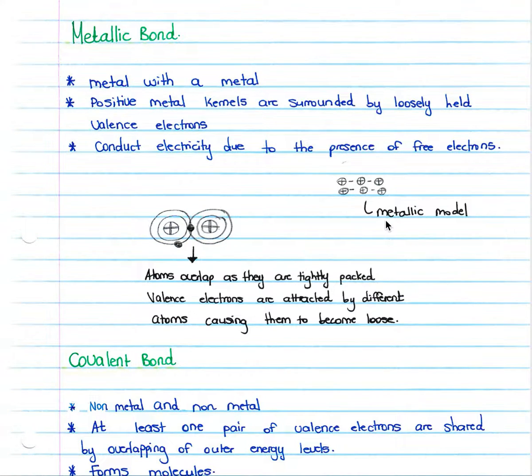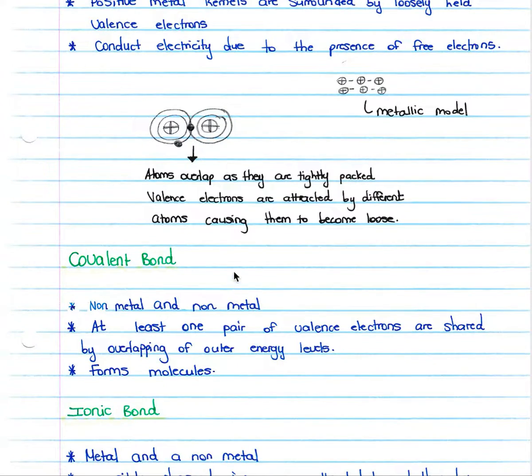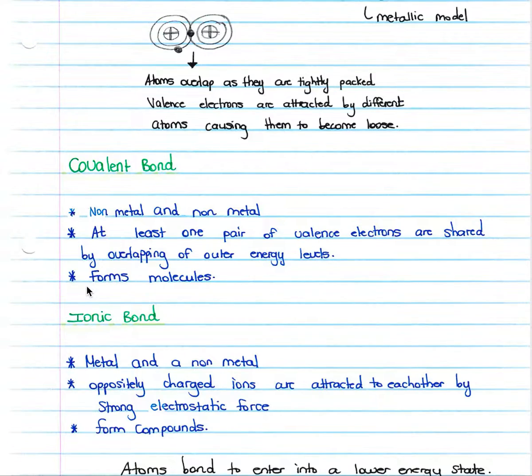We'll look at the different types of chemical bonds that form part of the chemistry syllabus. There are three types of bonds that we need to know: firstly the metallic bond, secondly the covalent bond, and thirdly the ionic bond.